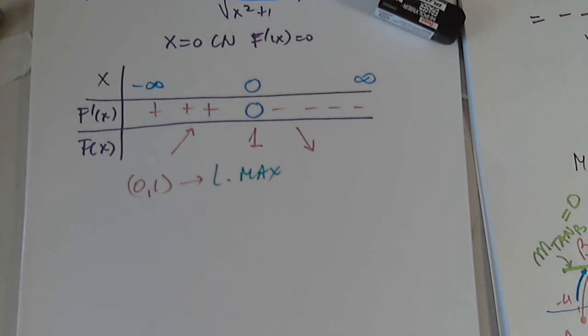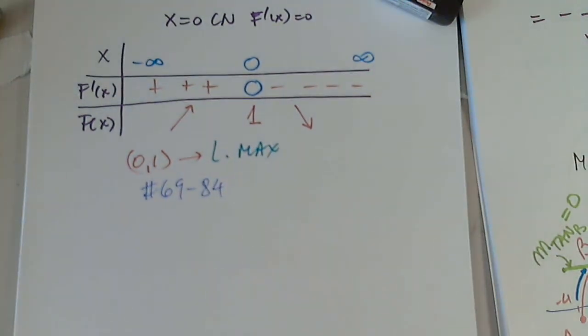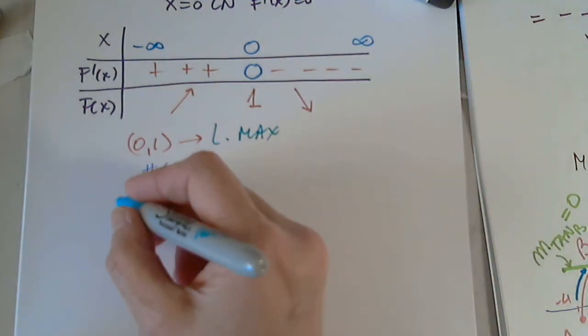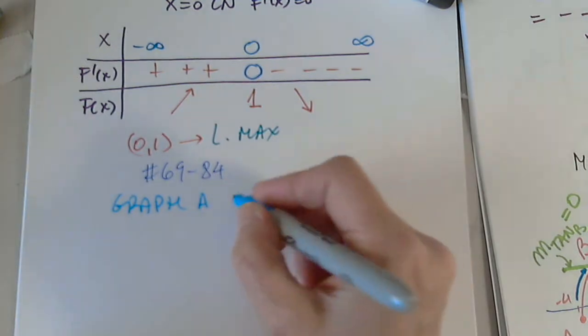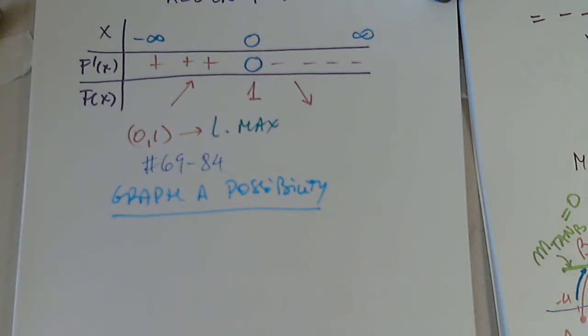Okay, I would like us to choose a problem from 69 through 84. A problem in which it says, draw a graph to match the description given. So, they're giving us some information about a function and they want us to come up with a sample of a graph. There is more than one correct answer. So, just graph a possibility.